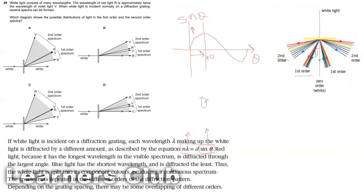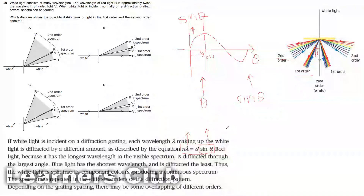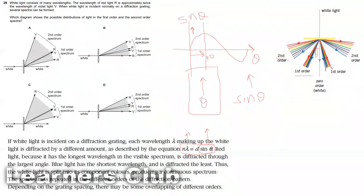When theta increases up to 90 degrees, sine theta is also increasing. Red has a wavelength greater than violet, so when wavelength is greater, sine theta is also greater. As a result, theta is also greater for red than for violet. So red color stays at the top because red has the greatest wavelength, and violet will be at the lower end because it has the least wavelength.